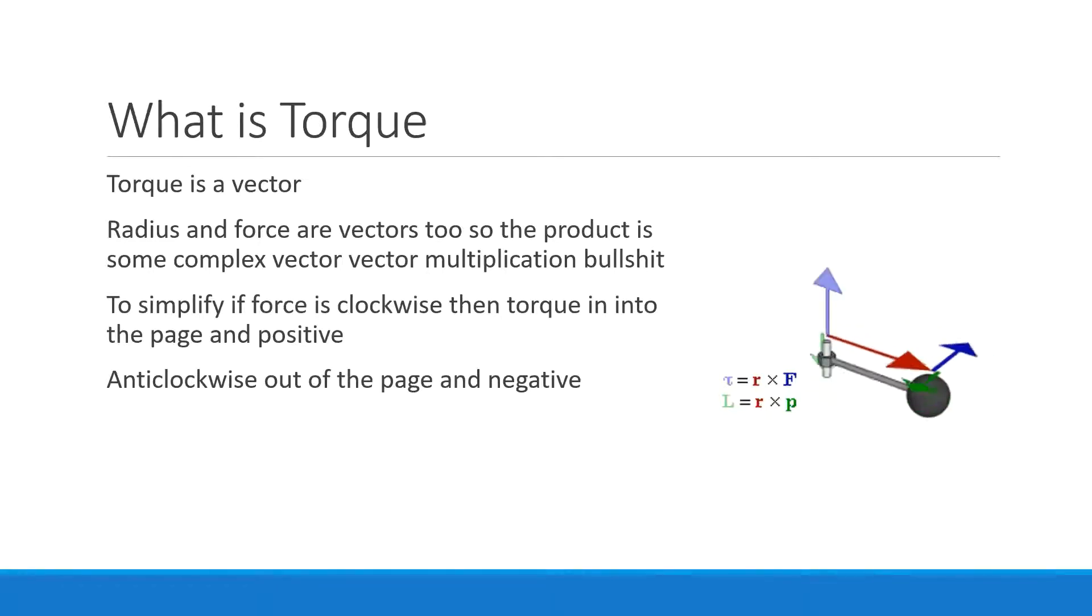Let's talk about direction because torque is a vector. Because torque is a vector, you need to give a direction. Radius and forces are vectors too, so the product is a complex vector-vector multiplication thing. If you guys were specialist math students, we could talk about cross products, but we're not going to because it's just not worth it.